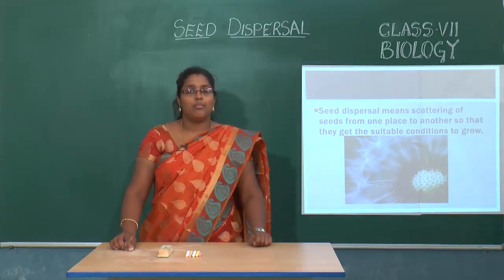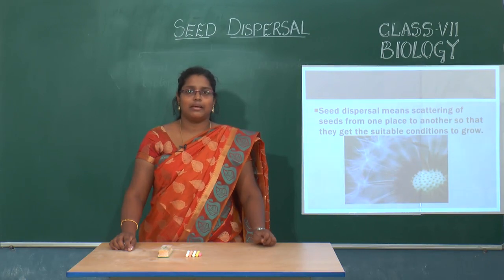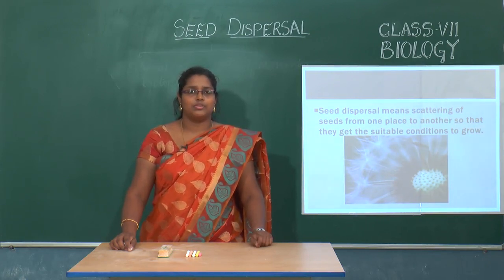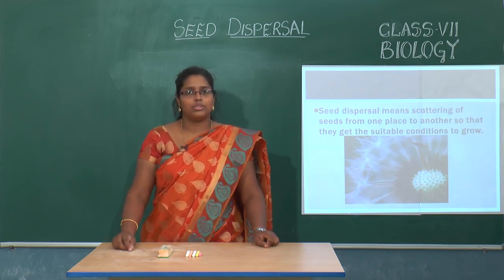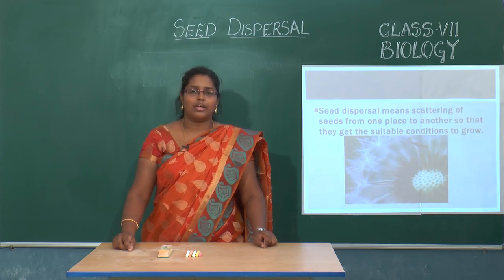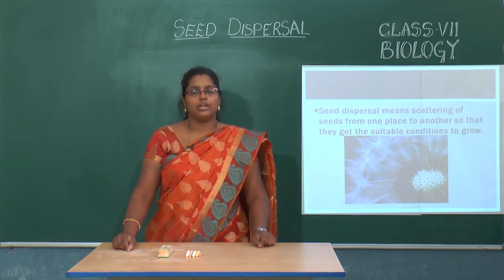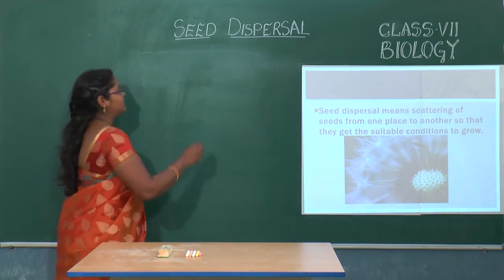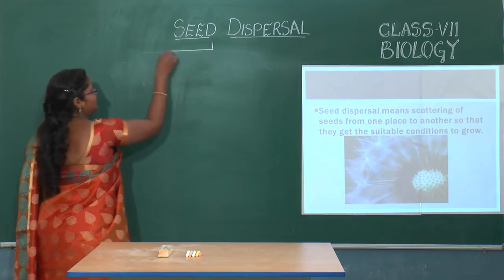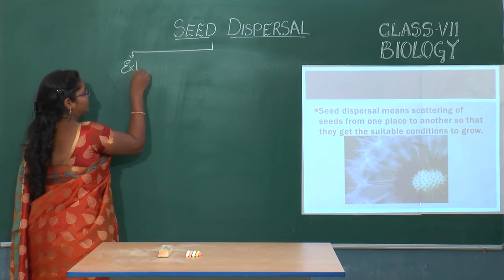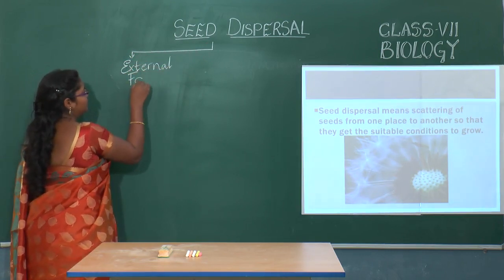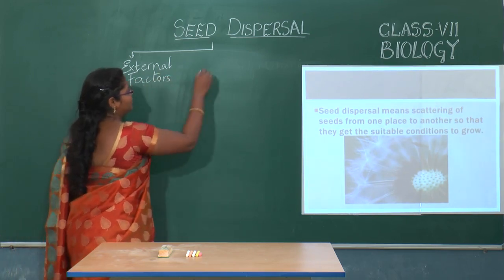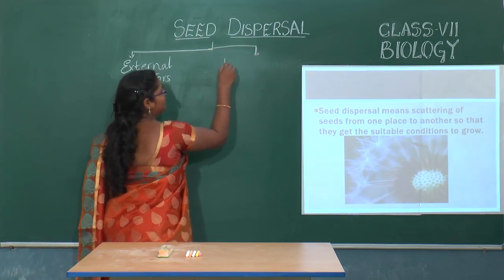We will be learning what mechanisms plants have adapted for seed dispersal. Plants might use other modes for dispersal, or they can develop a new mechanism of their own. If it is using other modes, we can say these are external factors. So seed dispersal can be by external factors or through a self mechanism, which are internal factors.